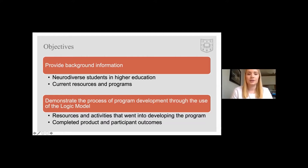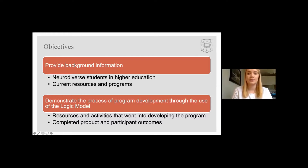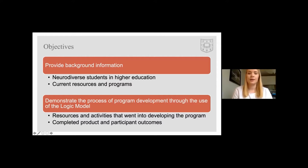At the conclusion of this session, participants will be able to understand the concept of neurodiversity, the current state of supports for neurodiverse students in higher education, and the role of occupational therapy in higher education. Participants will also be able to discuss outcomes of a program aimed at supporting students with neurodiverse needs in higher education. The development of the program will be analyzed using a logic model, which will include discussing resources and activities that went into creating the program, as well as the outcomes following implementation.